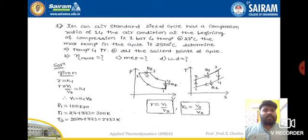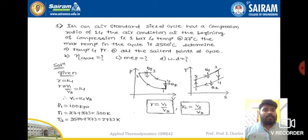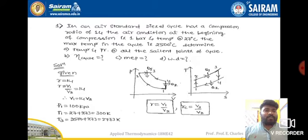From the problem, the compression ratio is given as v1 by v2, which is r = 14. The condition at the beginning of compression — the first state — gives us: pressure p1 = 1 bar and temperature t1 = 27 degrees Celsius, which is 27 + 273 = 300 Kelvin.